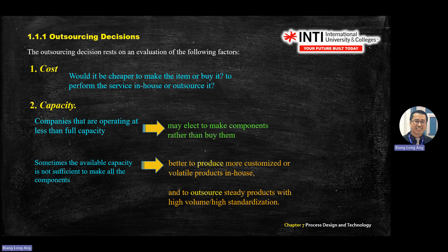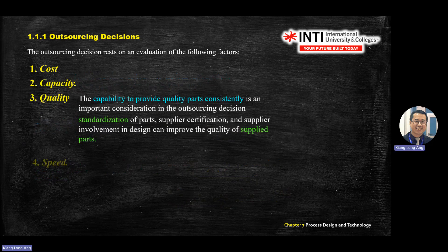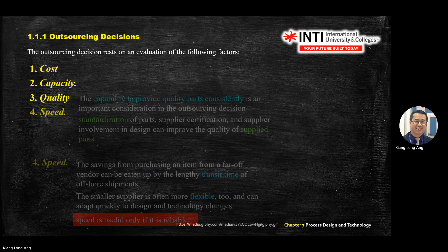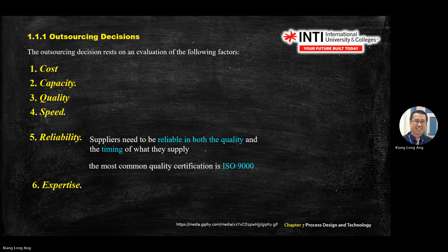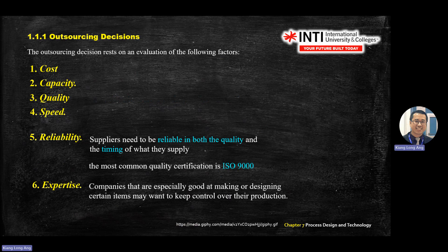Outsourcing decisions involve factors such as quality, speed, and reliability. In manufacturing, you demonstrate reliability by going for ISO standard certification. For example, Inti is currently going through a new ISO certification audit, trying to obtain a new ISO standard in education.